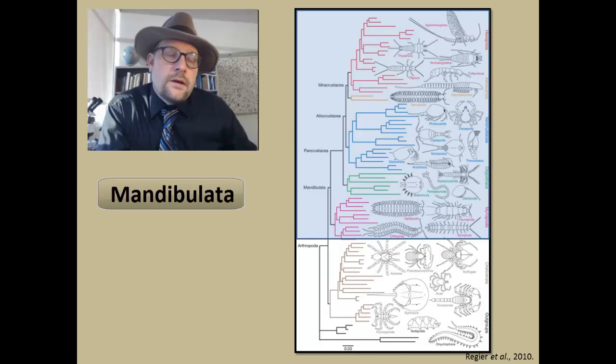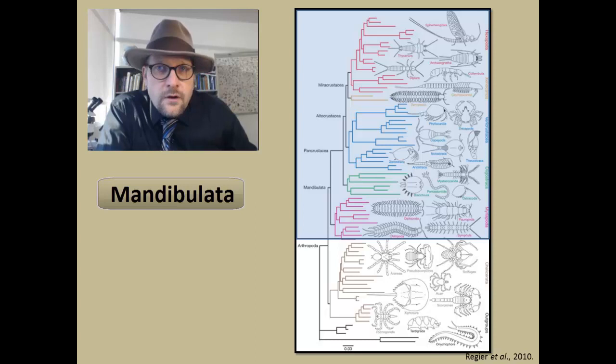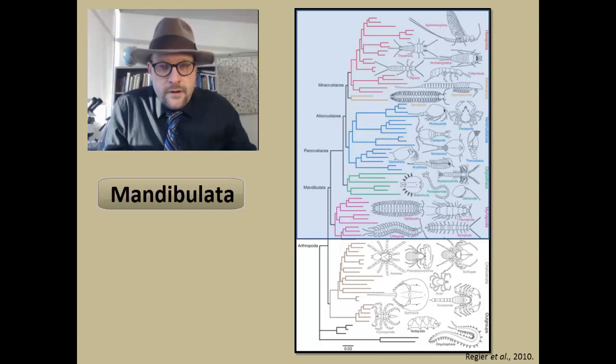Now together, the Hexapoda, the Crustacea, and the Myriapoda form a clade, and this is called the Mandibulata. Mandibulata is a very large group of the arthropods. This includes all the millipedes and centipedes, all the crustaceans—the shrimp, the lobsters, the barnacles, the lice shrimp—and includes all the insects as well. So a pretty diverse group.